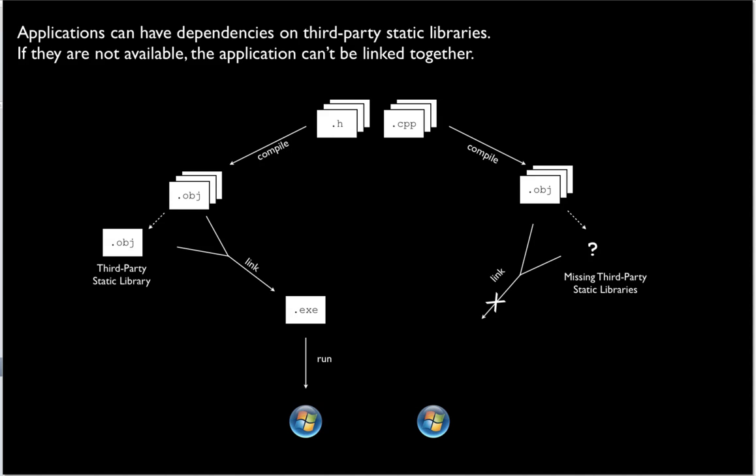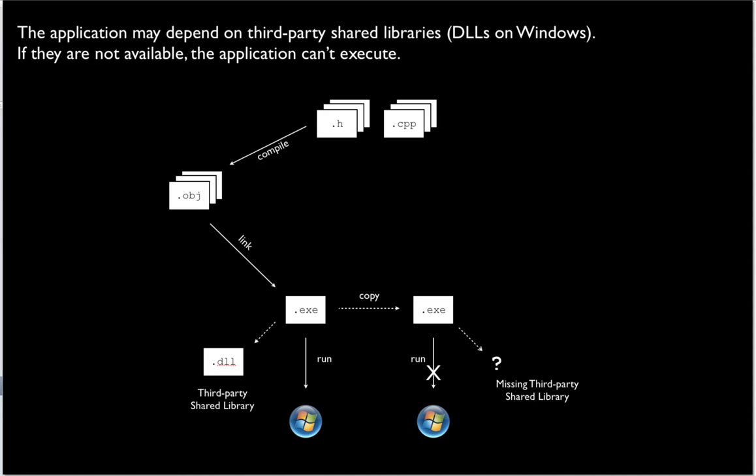It's also possible to have an executable that depends on a third-party shared library — on Windows this would be a DLL. Perhaps you've tried to run an application and got an error saying a certain DLL is not available. The executable has hooks identifying the need for this third-party library, and when it runs the environment makes that connection. If you copy that executable to another machine that doesn't have the DLL, it won't be able to run.